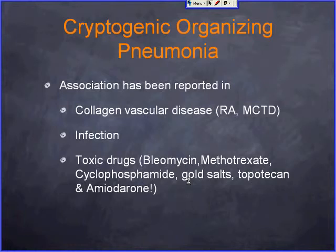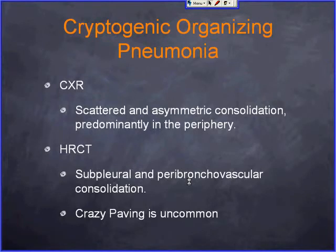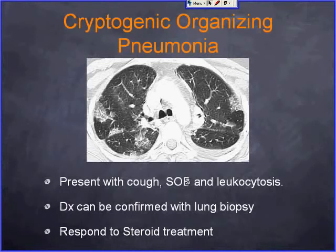On chest X-ray, BOOP shows scattered asymmetric consolidation predominantly in the periphery. On high-resolution CT, they tend to have peribronchiovascular and subpleural consolidation. The crazy paving pattern is uncommon in BOOP, so it wouldn't be the first thing you think about. Diagnosis is ultimately made by clinical response to steroid treatment or lung biopsy.